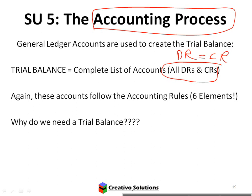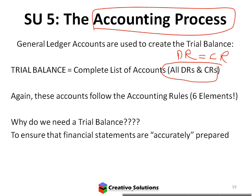Must the debits always equal the credits? If it doesn't, then there's an error — there's a mistake. So we need to check. We're not going to draw up statements if we have errors. Statements need to be accurate. We need to do the trial balance to check that.